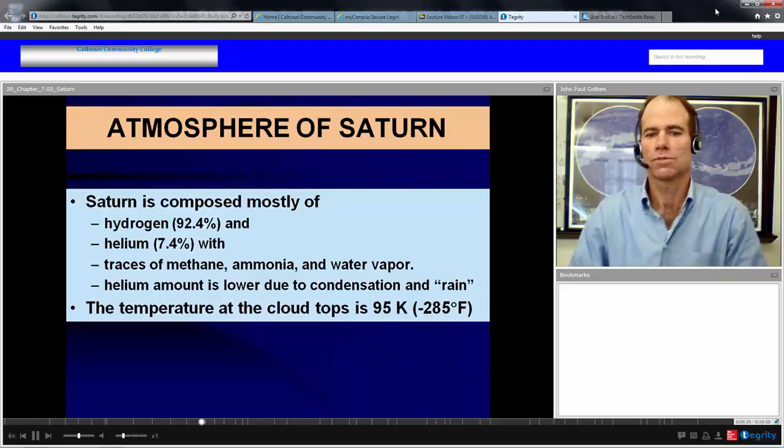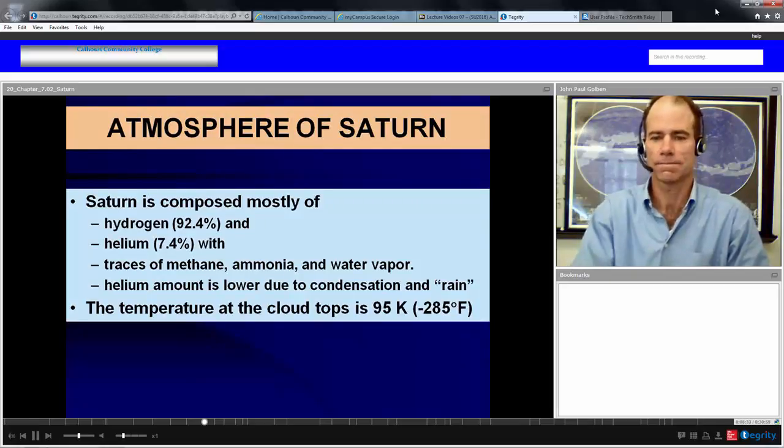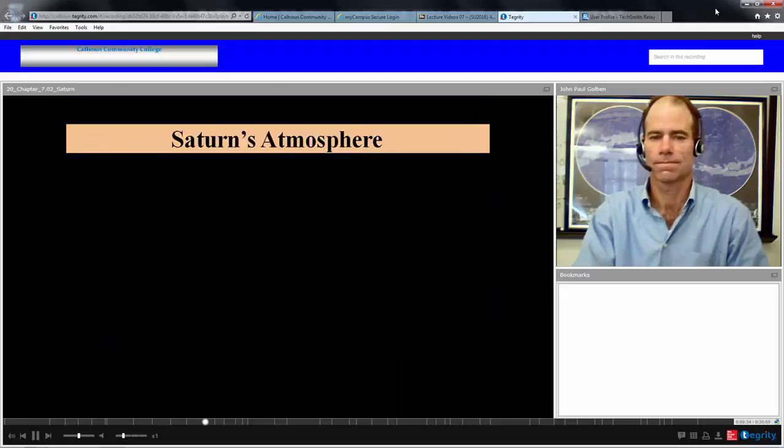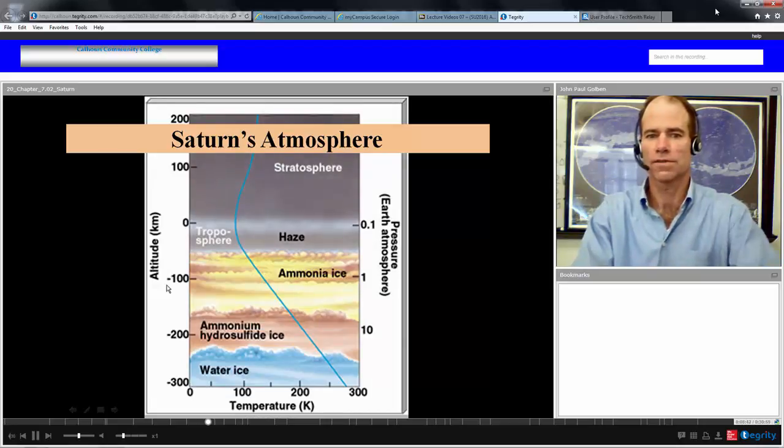Here's a look at Saturn's atmosphere. You have a stratosphere, troposphere, ammonia ice layer, ammonium hydrosulfide ice just like on Jupiter, but you don't see these brown bands as prevalent. And probably water ice below that.